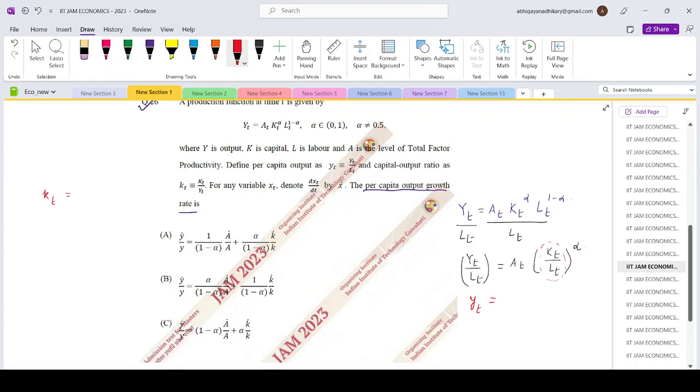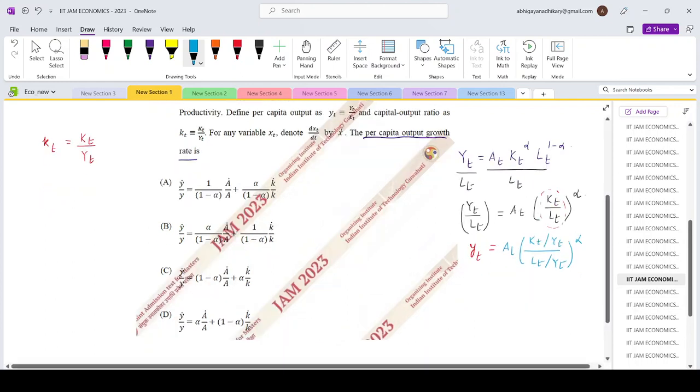My small Kt is basically capital Kt by Yt. So in order to use this we will make a slight adjustment. Divide the numerator and denominator by Yt to the power alpha. So that will make small yt equals A t, where on the numerator Kt by Yt is small Kt and Lt by Yt is basically 1 by small yt.